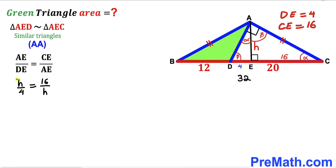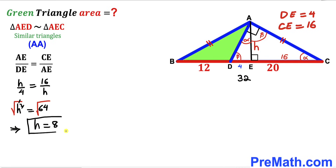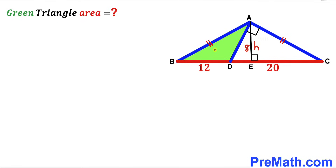Now we cross multiply, giving us h squared equals 64. Taking the square root on both sides, the square and square root cancel, so our height h turns out to be positive 8 units. Thus our lowercase h height value is 8 units.